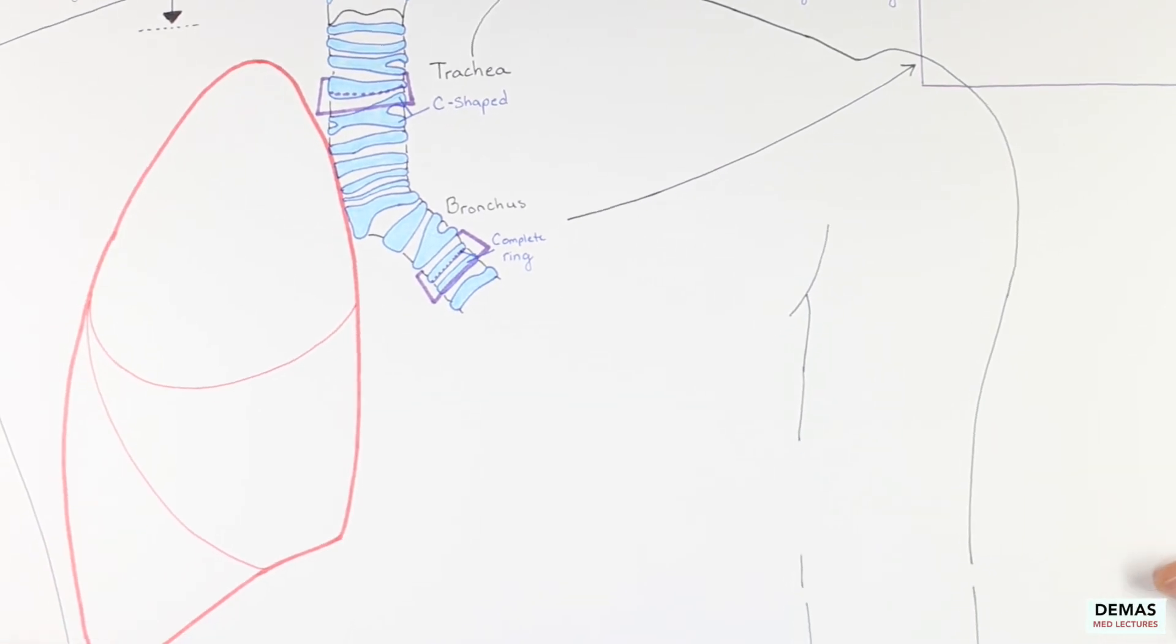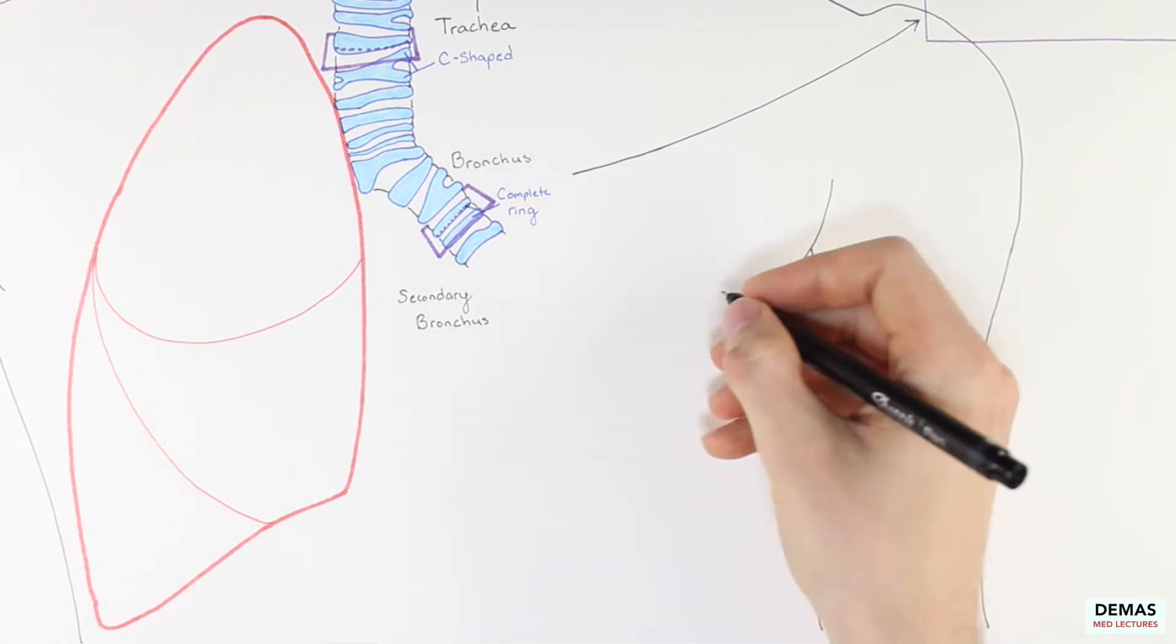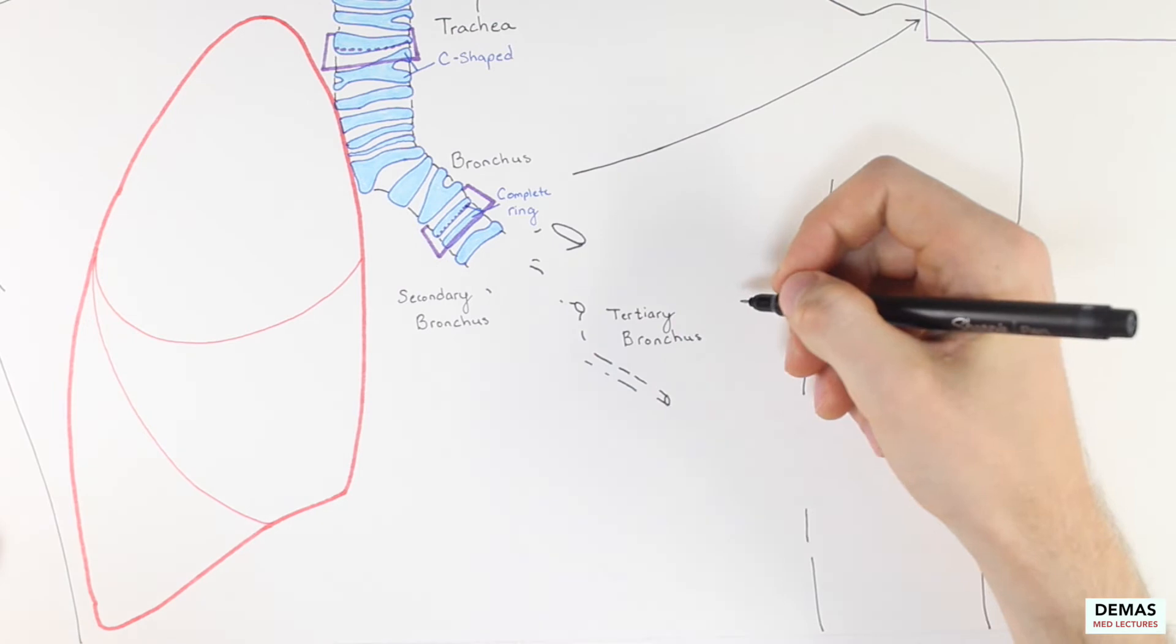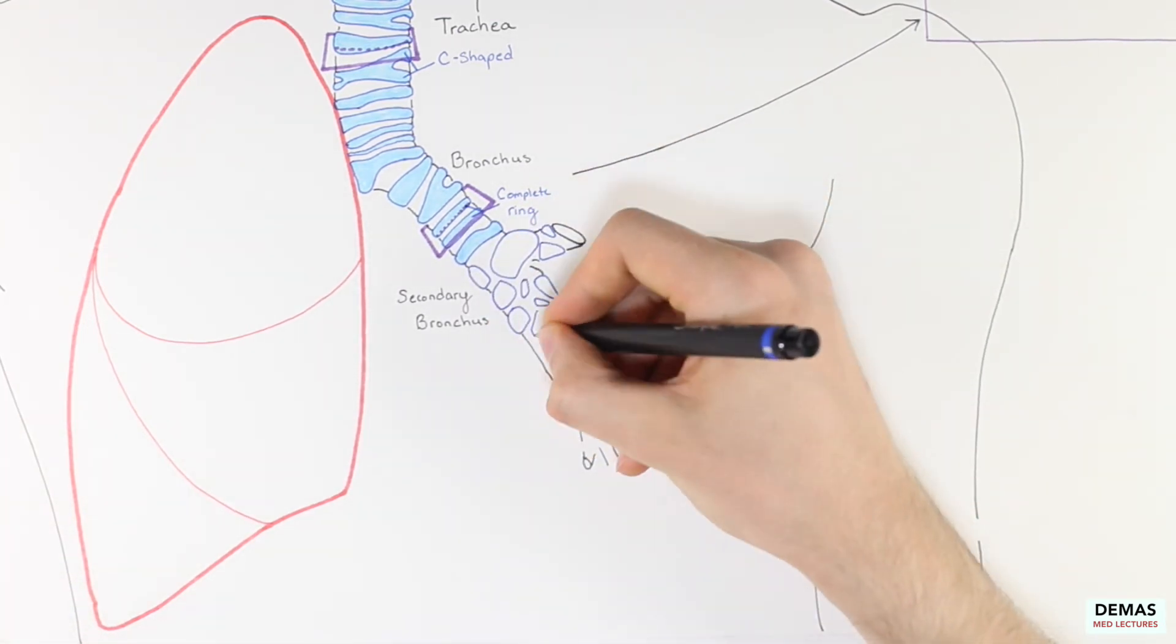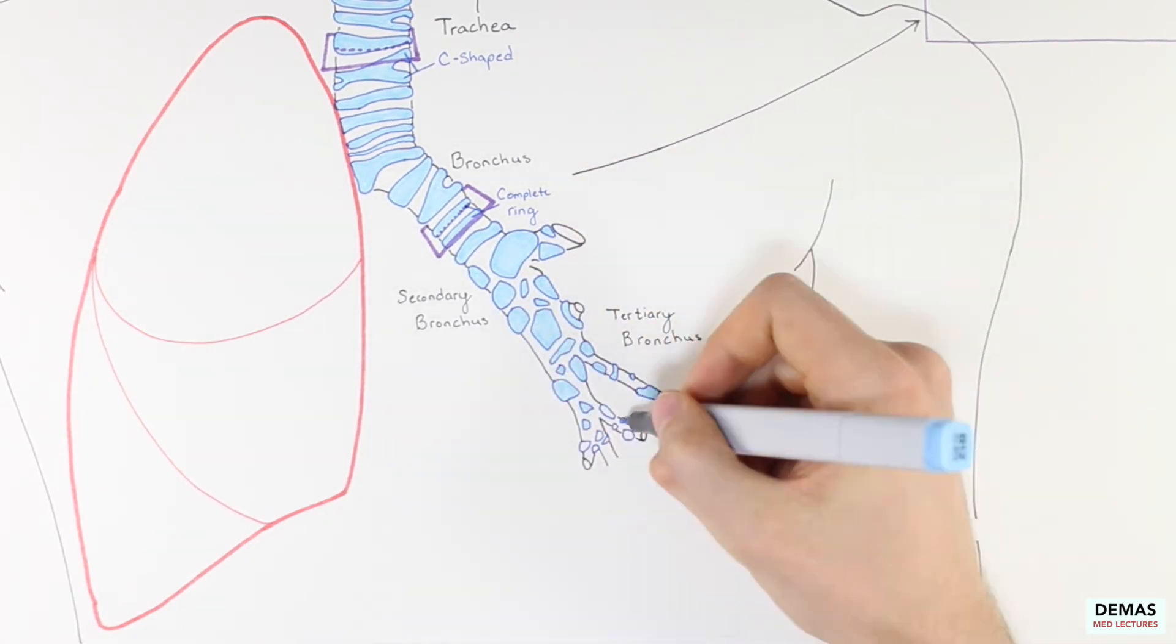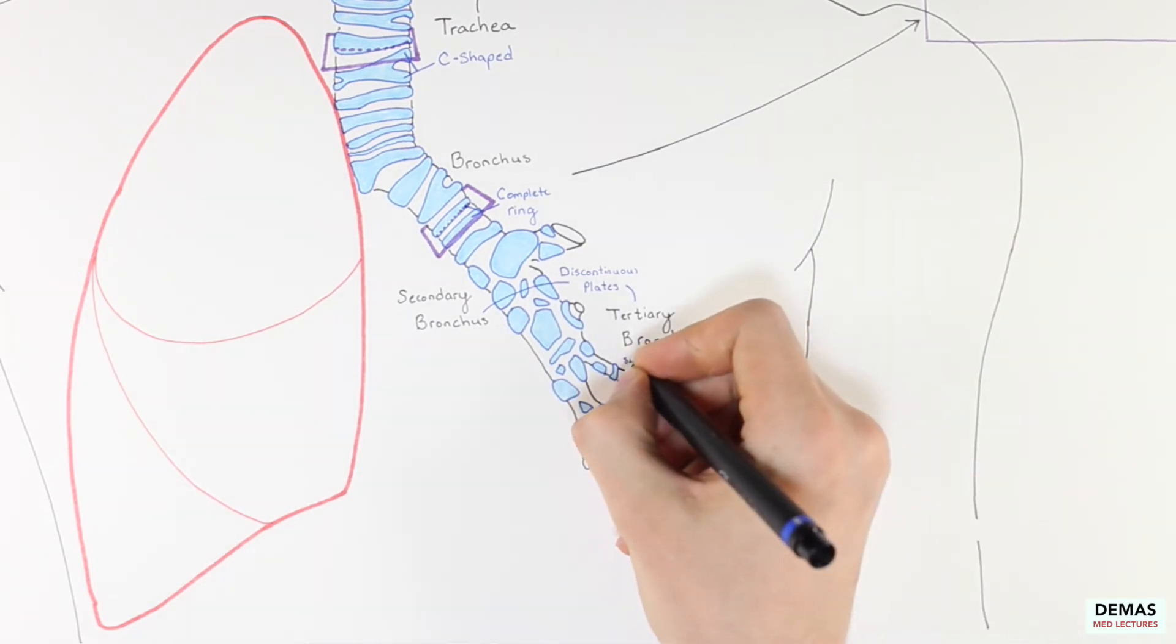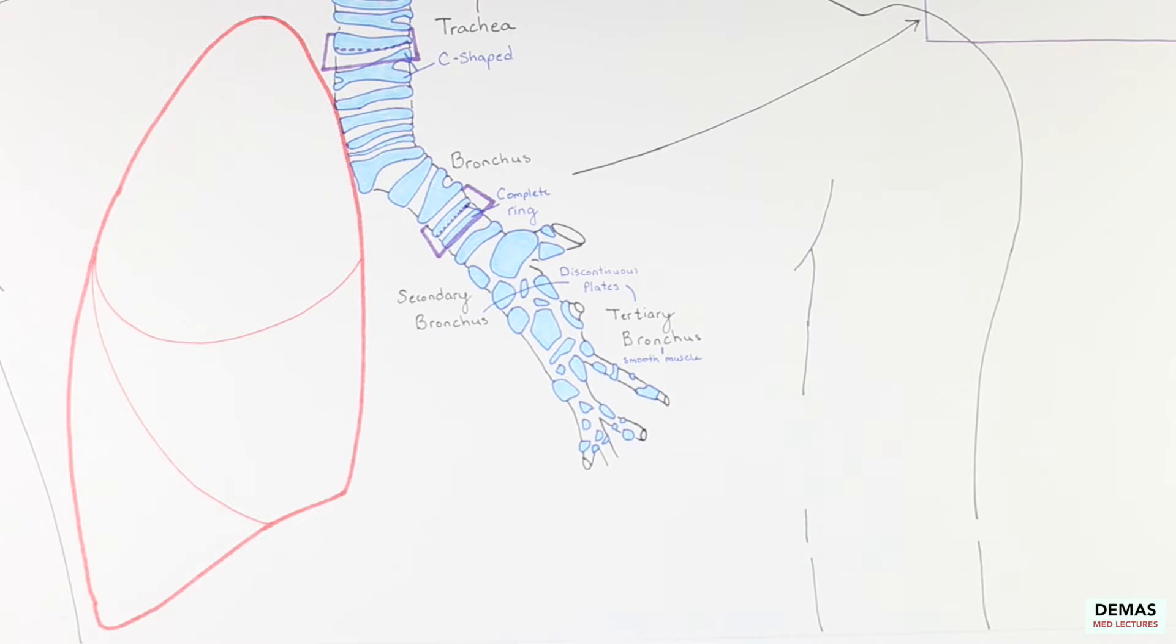Let's move on now to the next part of the conducting division of the respiratory tract. As the primary bronchi further branch and enter the lung tissue they become secondary and tertiary bronchi. These secondary and tertiary bronchi are smaller in diameter and the organization of the cartilage changes to discontinuous plates rather than continuous rings. Also it is important to note that unlike the secondary bronchi the tertiary bronchi contain a prominent layer of smooth muscle in their wall.